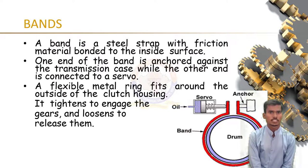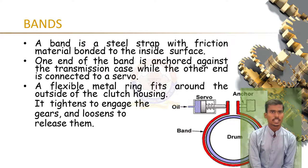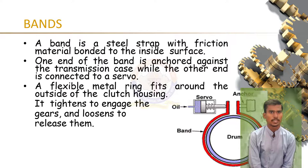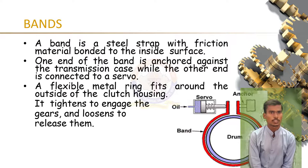Transmission band: These are bands that wrap around a section of the drivetrain and connect to the housing. As the band tightens around the drum, transmission fluid is squeezed out through a cut in the band surface, bringing the drum to a stop or hold.